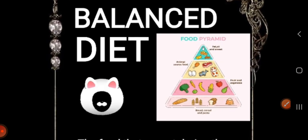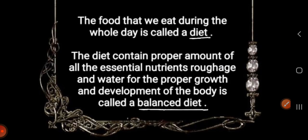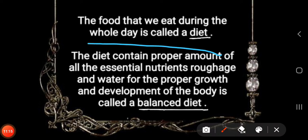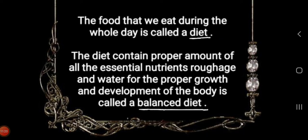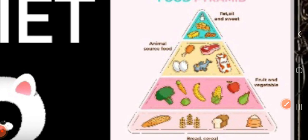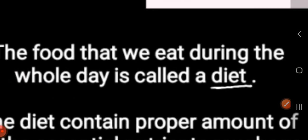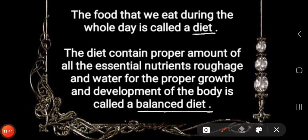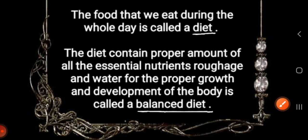Next we have balanced diet. The food that we eat during the whole day is called a diet. Our diet consists of many food items made from cereals like wheat and rice, pulses, fruits, vegetables, eggs, milk, meat, fish, and so on. The diet that contains proper amounts of all the essential nutrients, roughage, and water for the proper growth and development of the body is called a balanced diet. A growing child needs more proteins than a grown-up man to develop body tissues needed for growth. A pregnant woman needs more proteins in her diet for building the body of the developing baby.